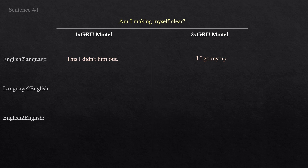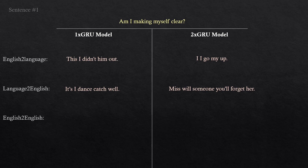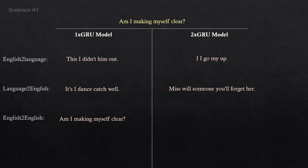Let's now see what the original sentence would mean in English. According to the first model, it means: 'It's, I didn't catch well.' The second model outputted: 'Miss, will someone you'll forget her?' Finally, the most important thing to check — do the models actually know what their language means? When I asked the first model to translate 'this I didn't him out', it outputted the original sentence, which is quite surprising considering that it completely changed the sentence. In contrast, the second model doesn't perform as well. The best thing it can come up with is: 'Can I get my more?' Though it did try to follow the typical structure of questions, which is already an accomplishment.